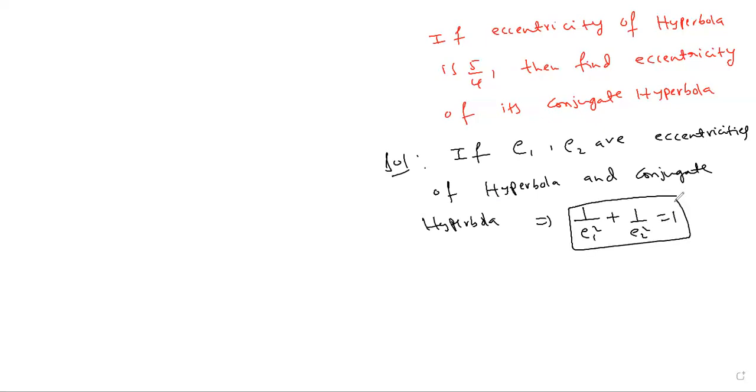So e1 is eccentricity of hyperbola, then e2 is eccentricity of conjugate hyperbola. Then what is the relation? Relation between eccentricity of hyperbola and its conjugate is 1 by e1 square plus 1 by e2 square is 1. Very important relation.